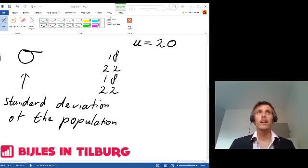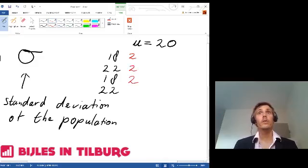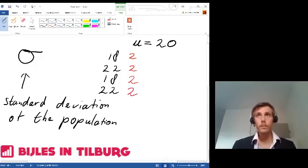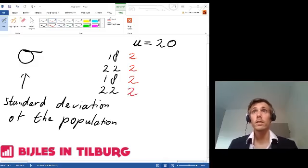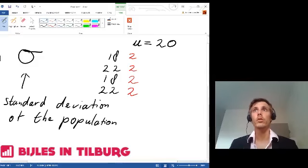So, what's the standard deviation? It's actually the average distance from the mean. 18 is 2 away from the mean, 22 is 2 away, 18 is 2 away, and 22 is also 2 away. Since the average distance is 2 from the mean, the standard deviation will be approximately 2.